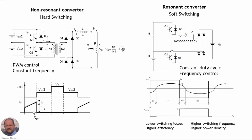At these intervals, when we turn off the switch and when we turn on the switch, we are going to have switching losses due to the operation of the transistors. Usually this type of converters operates with PWM control at constant frequency, so we are changing the duty cycle of the converter in order to regulate the output voltage. For example, in this case we have this expression here — if we change the value of the duty cycle, we can change the value of the output voltage.